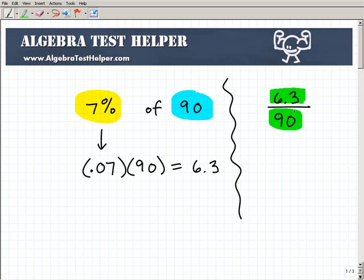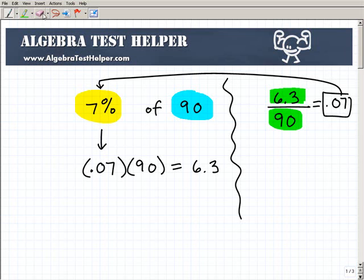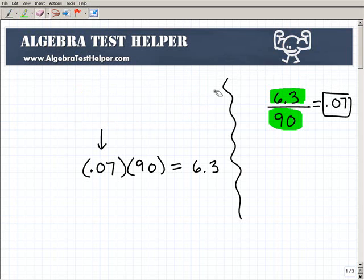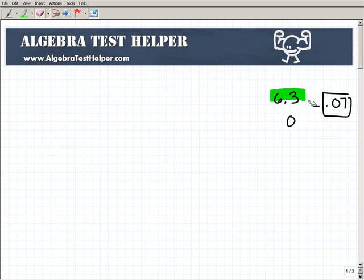So if you take 6.3 and you divide by 90, you'll see that you'll get this decimal, 0.07. Now, 0.07 as a decimal, remember, is the same thing as 7%. As 7 written as a percent. So hopefully this makes sense too. And let's go ahead and do another example, just to kind of drill this home.